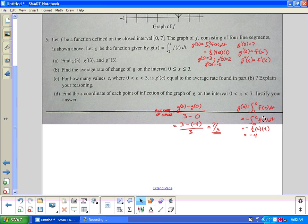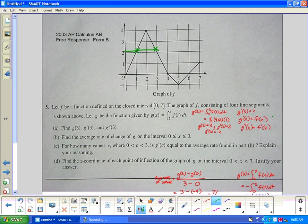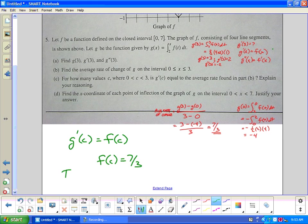Letter C. For how many values of C where C is between 0 and 3 is g prime equal to the average rate of change found in B? So the average rate of change is 7 thirds. It's asking when is g prime C? So you've got to remember, g prime from our first problem up here, g prime is just simply f(x). So g prime of C is equivalent to f of C. Well they're asking that to be, they're asking f(C) to be 7 thirds. From the standpoint of the graph, 7 thirds is right here. Between 0 and 3, I hit the graph two times. So there are two values.